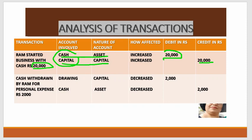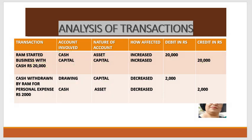The second transaction is cash withdrawn by Ram for personal expenses ₹2,000. Ram is a businessman and the business and the businessman are both different entities, because in the business, transactions are recorded and the owner is treated separately. Ram has borrowed money from the business for personal expenses. There are two accounts here: drawing and cash. Drawing is a reduction in capital because money has been taken from the business. So drawing account is debited, and cash — which is an asset that has decreased — is credited.